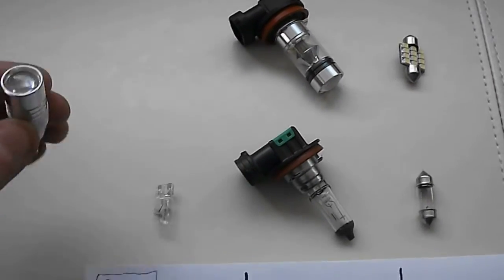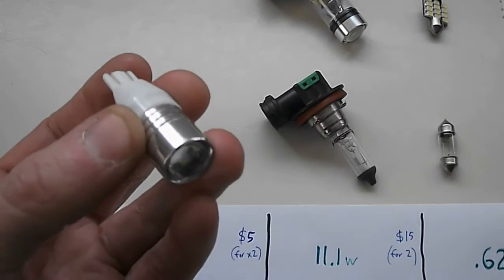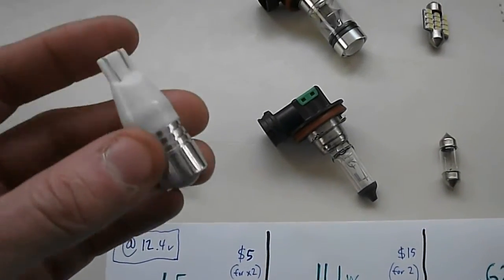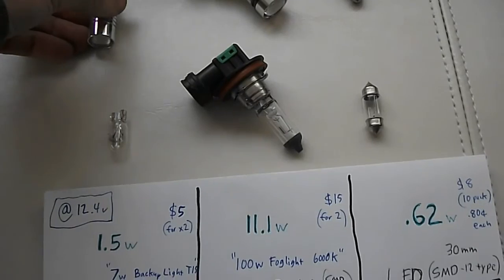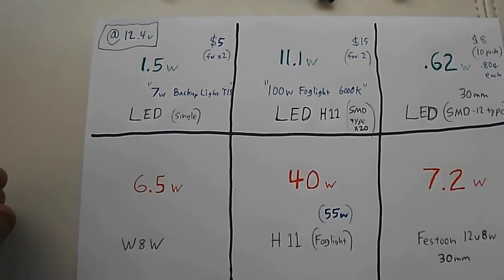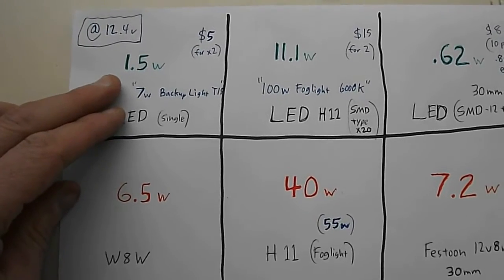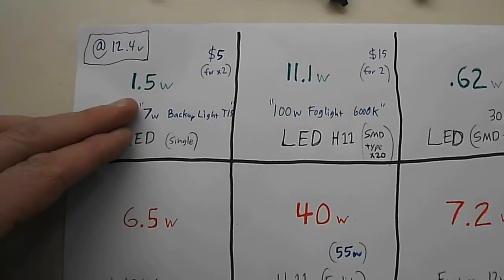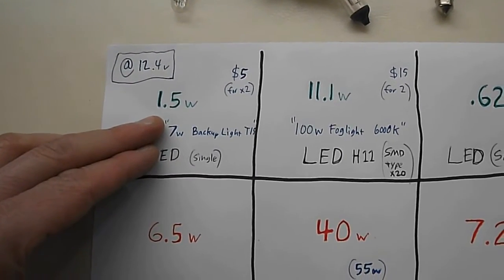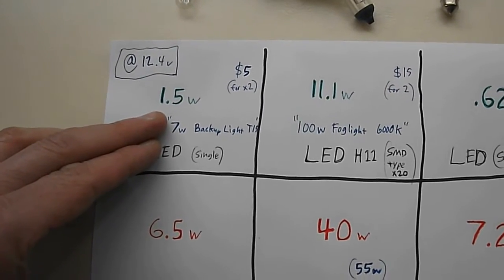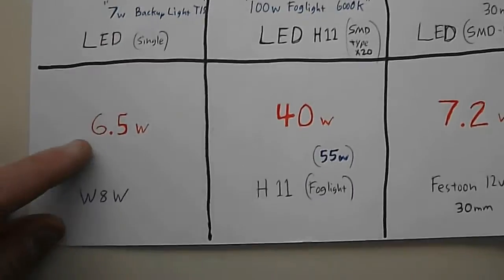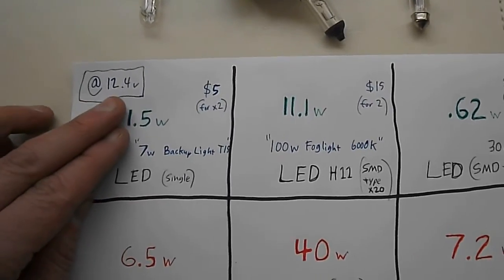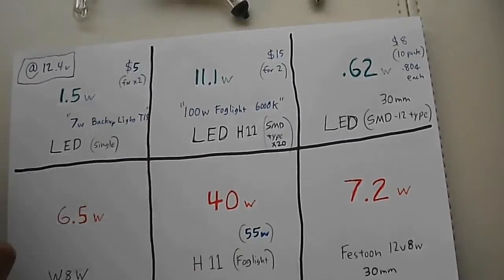So what we have first is map light. This I'm very happy with. These are just a single SMD LED, but it's a projector light. So it puts all the light out right where you want it. And very happy with that. That was only $5 for two of them. And it put out 1.5 watts. Which is, I don't know where the 7 watt backup light came from, but in actuality, 1.5. I would estimate at that wattage that's probably putting out about 15 watts of halogen power. So compared to 6.5, which is what I measured before, it's quite an improvement. And of course, all of these were measured at 12.4 volts.